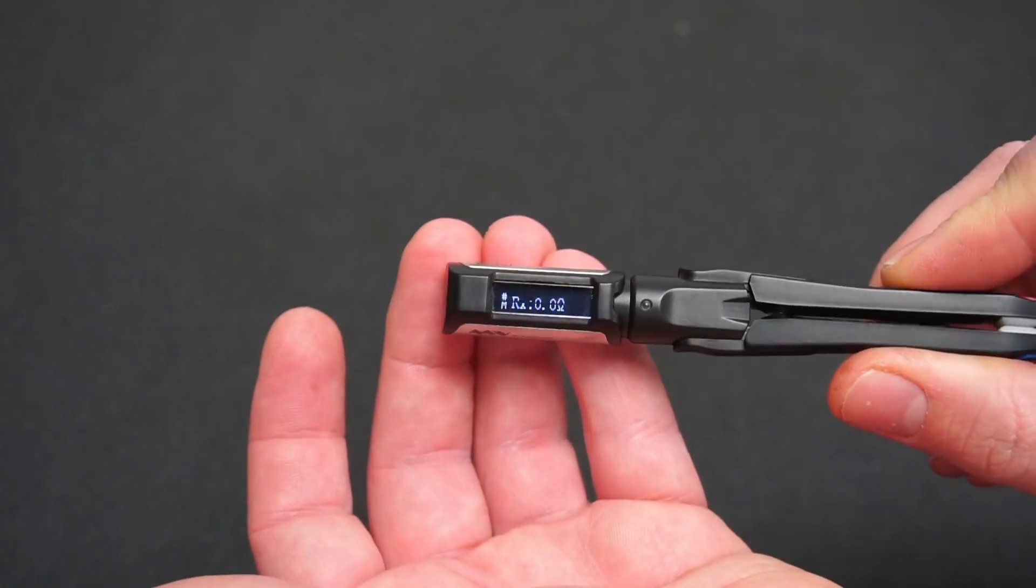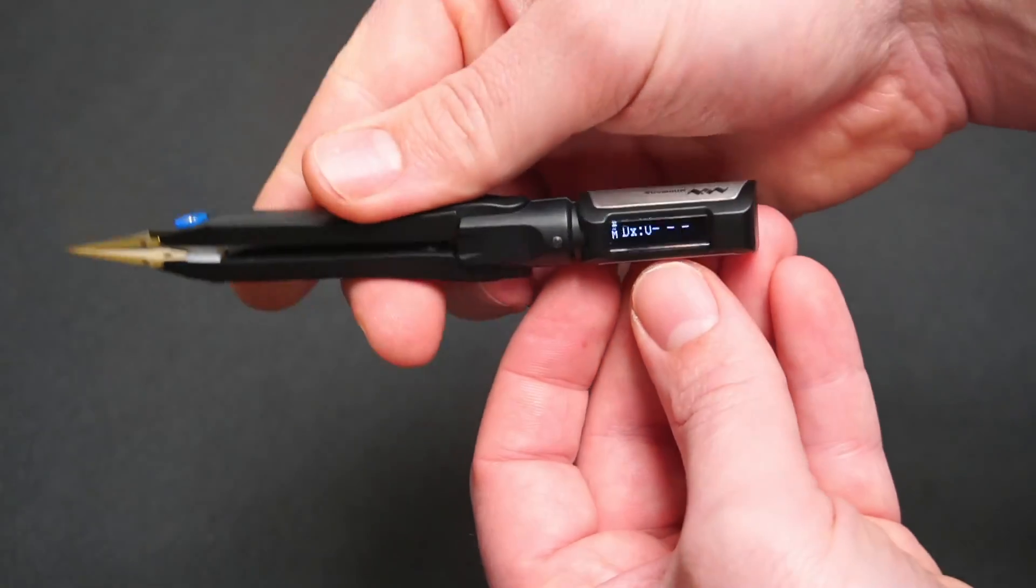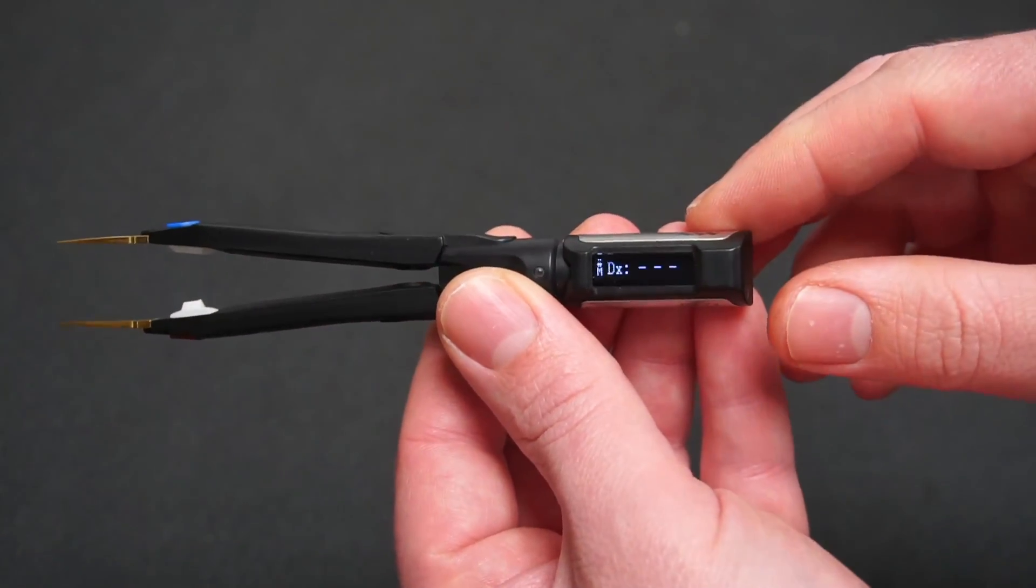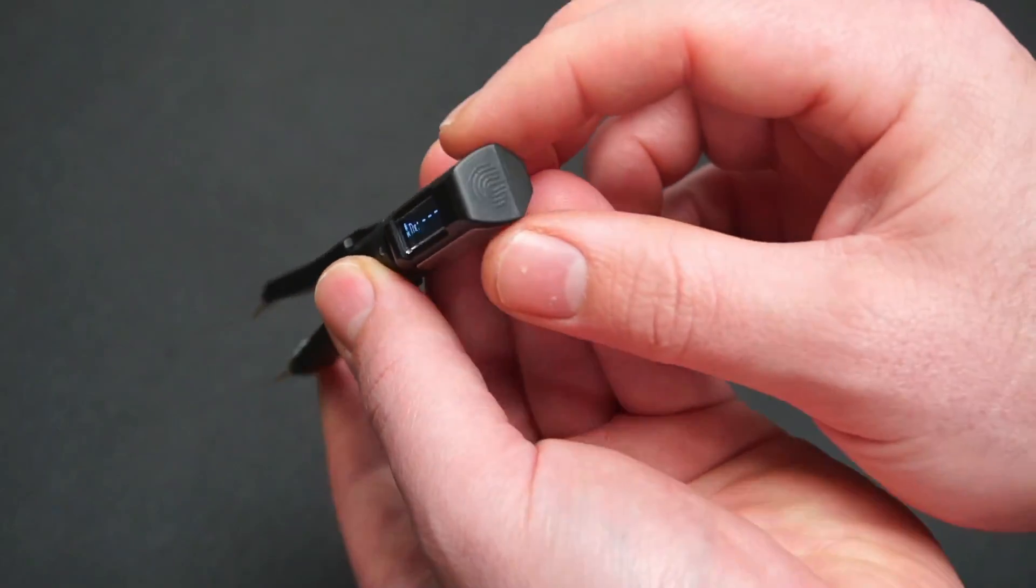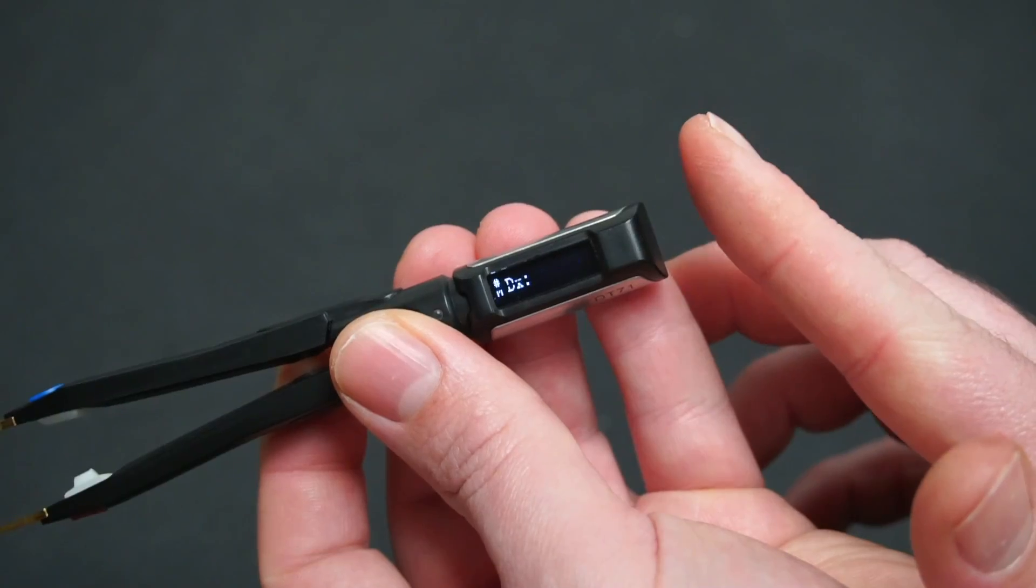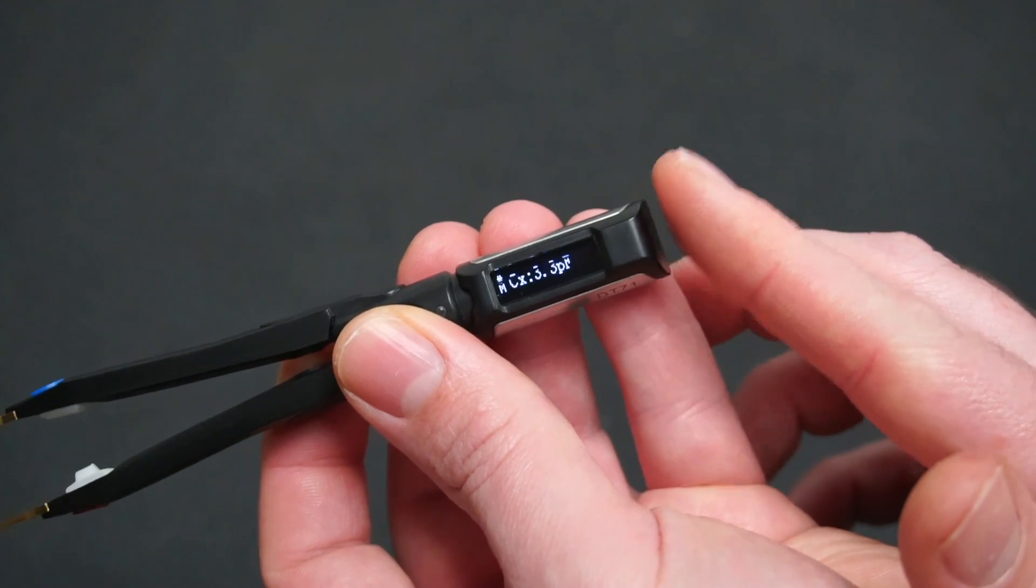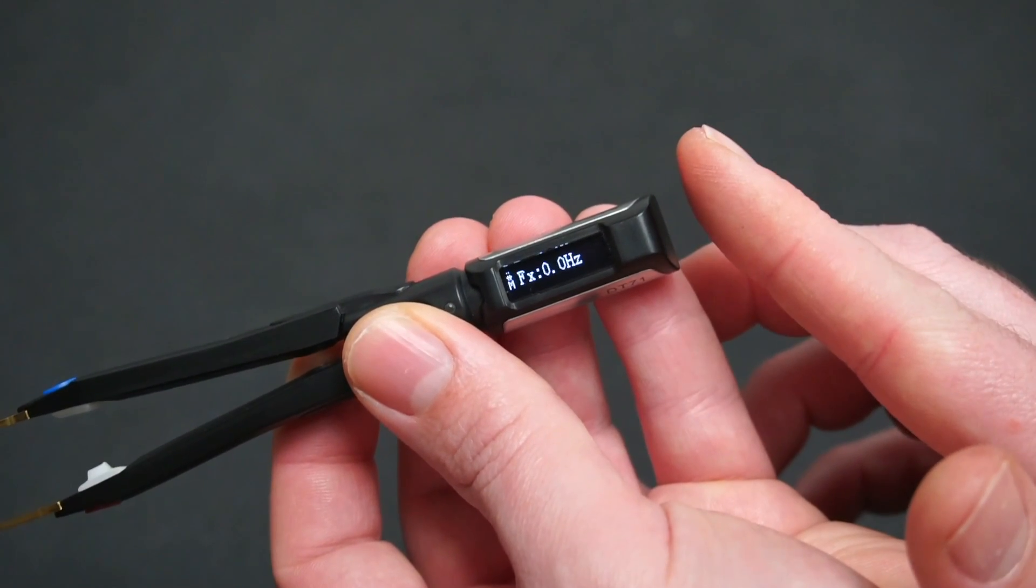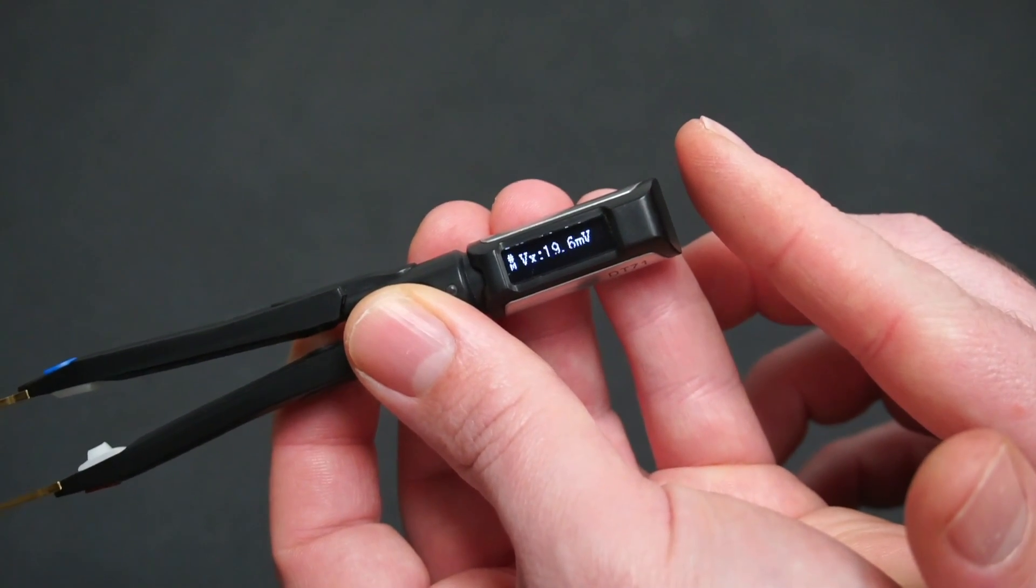The tweezers are ambidextrous and the screen autorotates depending on orientation. The user interface is as minimalistic as it could be with only one touch sensitive button located at the end. Short pressing cycles through the various measuring modes such as resistance, diode test, capacitance,